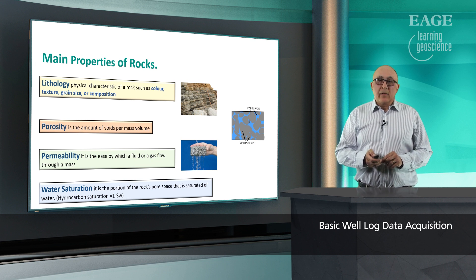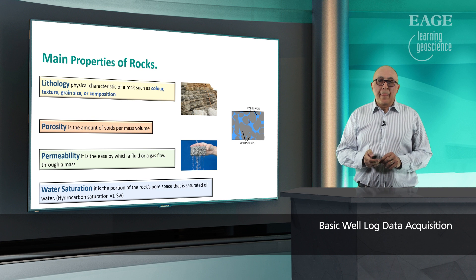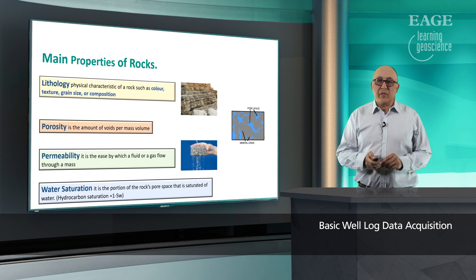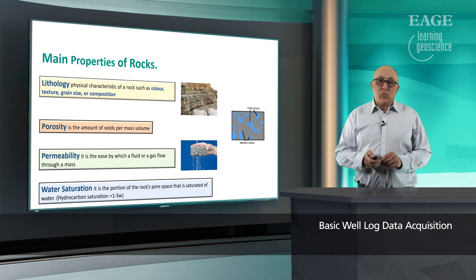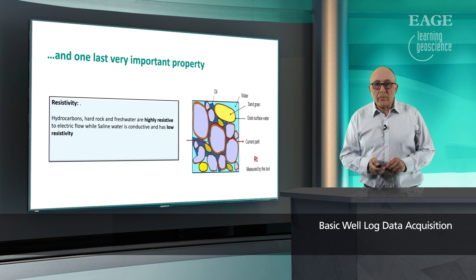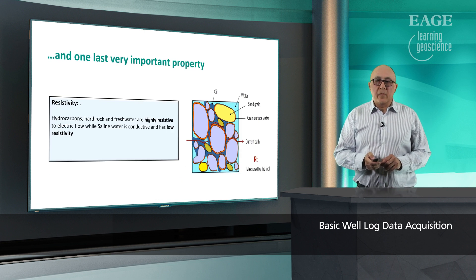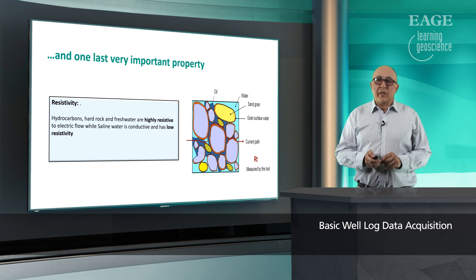Permeability, which is very related to porosity, is the ease by which fluid and gas flow through the rock. Water saturation, which is very important for petrophysicists, is the portion of the rock which is saturated with water. Whatever is not water has got to be hydrocarbons. And one last property: resistivity, which is simply the resistance of the rock to electric current.